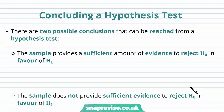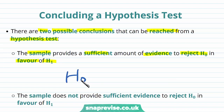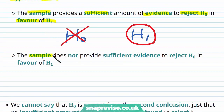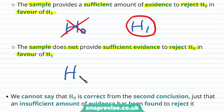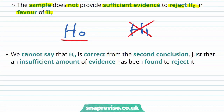So how do we conclude a hypothesis test? There are two possible conclusions. First, the sample provides sufficient evidence to reject H0 in favour of H1, in which case H0 is rejected. Otherwise, the sample does not provide sufficient evidence to reject H0 in favour of H1, so H0 still stands. We cannot say that H0 is correct from the second conclusion — only that there is insufficient evidence to reject it.